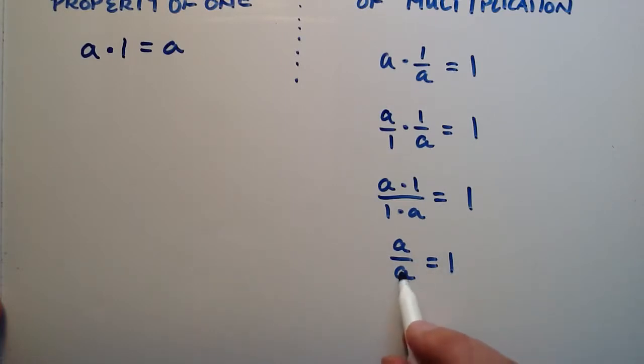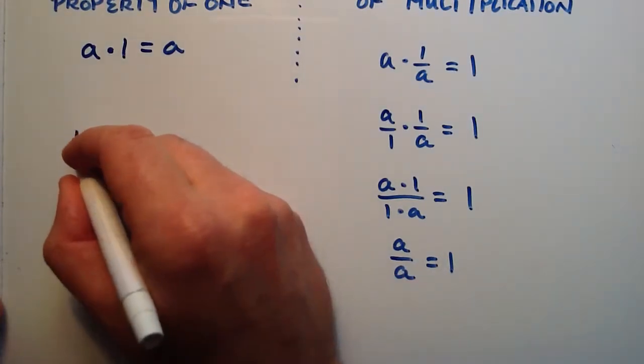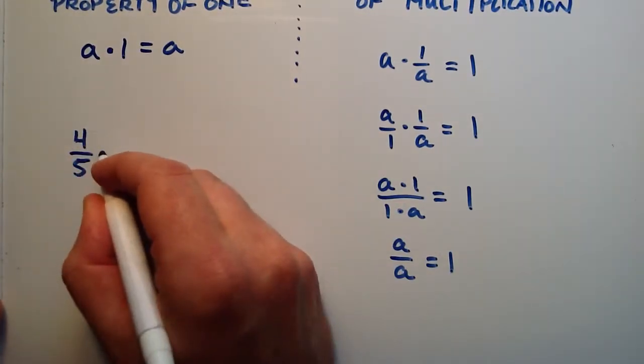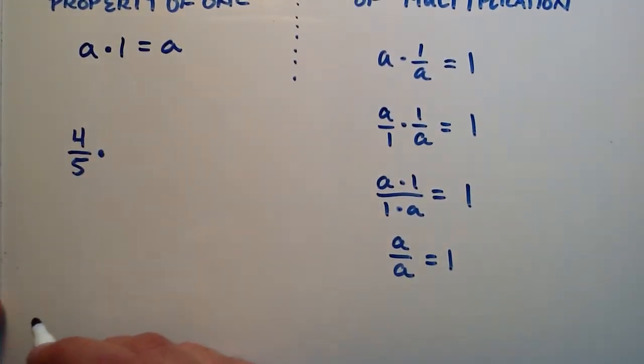So how can we use this to our advantage now? Well, let's say that we have some number, we'll call it, we'll just do 4 fifths. And we want to write this fraction 4 fifths in a different form. Well, we can do that by using the multiplication property of 1.